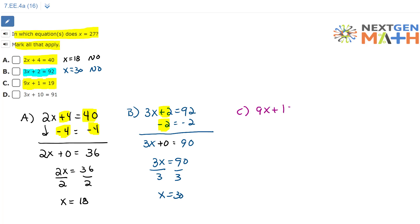9x plus 1 equals 19. Again, we're going to subtract 1 from each side. That will leave us with 9x plus 0 equals 18, because 1 minus 1 is 0 and 19 minus 1 is 18. We can rewrite this as 9x equals 18. Divide each side by 9. x equals 2.